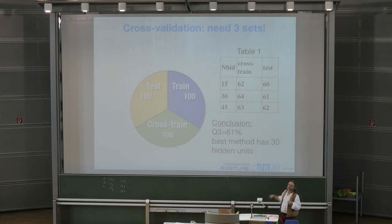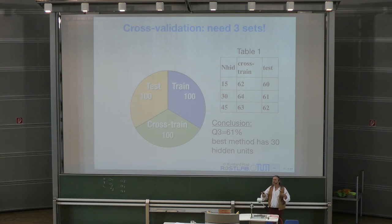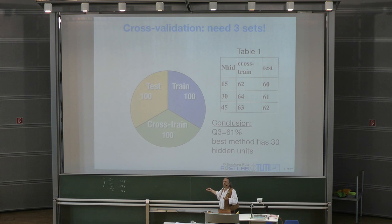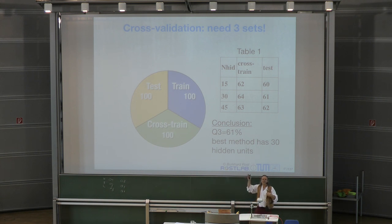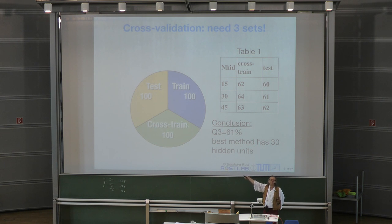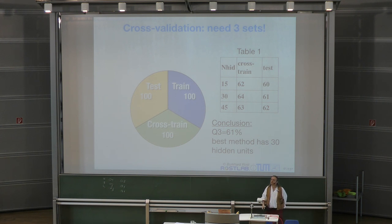The free parameter here is number of hidden units — but in a typical example, it could be linear regression versus SVM, different basis functions, different numbers of hidden units, or different types of input. All of these decisions have to be made on the cross-training set. And don't forget: these sets have to be mutually independent, with no overlap.